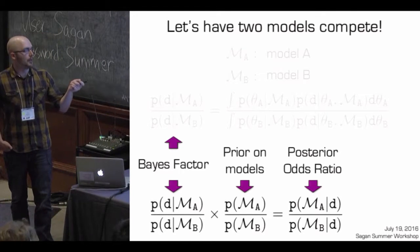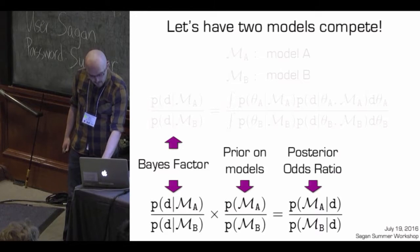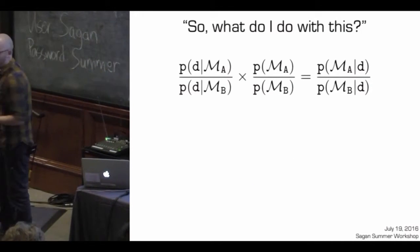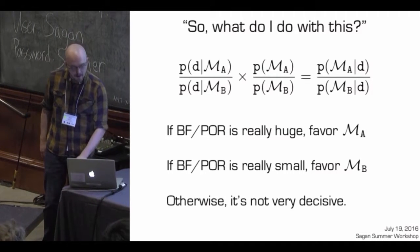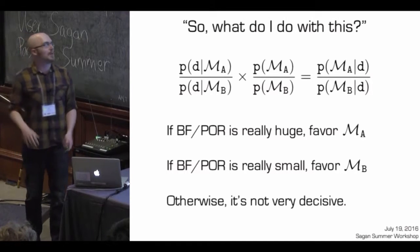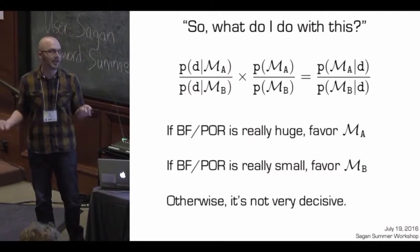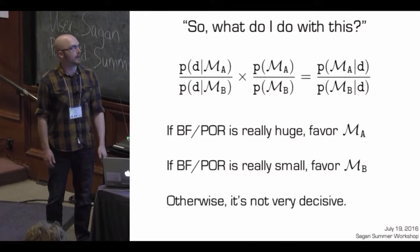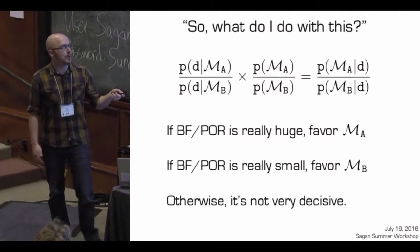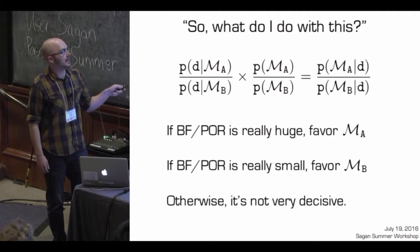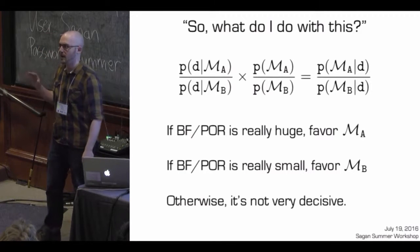If the probability of these models were equally weighted, then the Bayes factor is basically equal to the posterior odds ratio. So how do I use this in practice? If you look at your result and see that the Bayes factor or posterior odds ratio is very large — say 10 to the 10, 10 to the 20 — then you would generally want to favor model A. If it's really small, you might favor model B. But in many cases when you compute these evidences, it may not be very decisive — maybe the difference only spans a couple orders of magnitude.